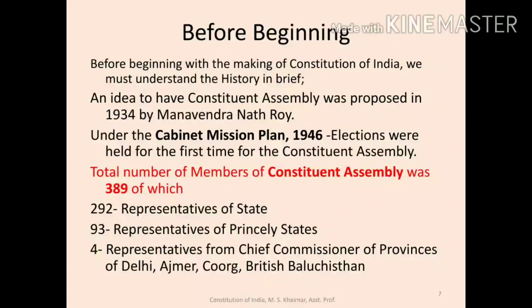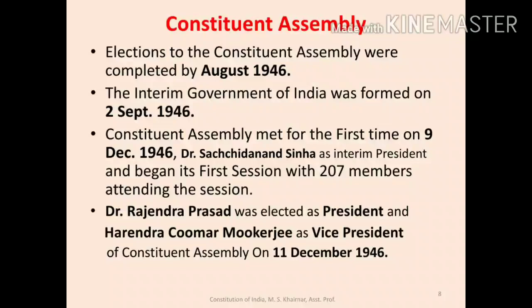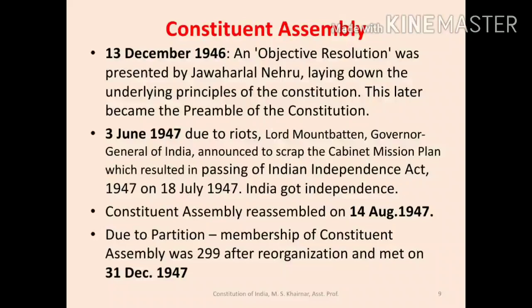After elections, the Interim Government was formed on 2 September 1946, and Dr. Sachchidananda Sinha was appointed as Interim President of the Constituent Assembly on 9 December 1946. After 2 days, i.e., on 11 December 1946, Dr. Rajendra Prasad and Shri H.C. Mukherjee were appointed as President and Vice-President respectively of the Constituent Assembly. In this Constituent Assembly, on 13 December 1946, an objective resolution — i.e., the objectives and purposes of the assembly and of the constitution — was laid down by Jawaharlal Nehru.